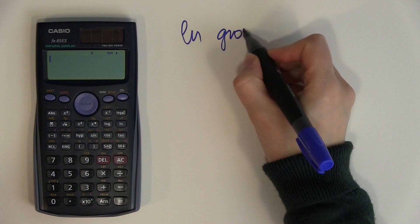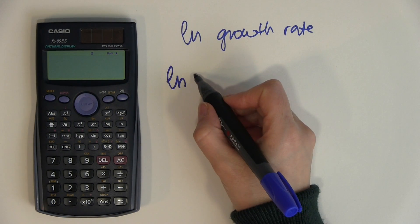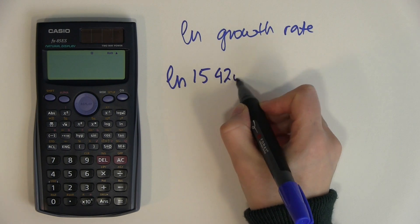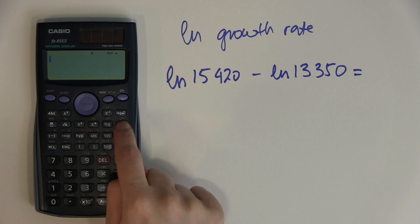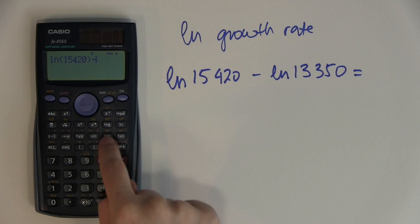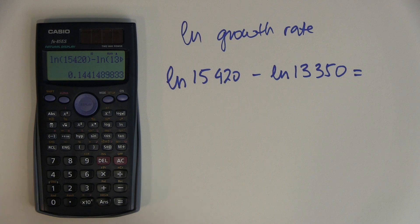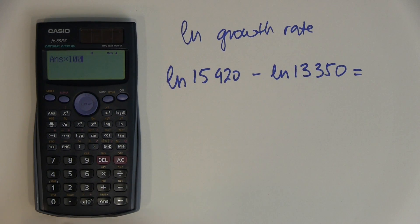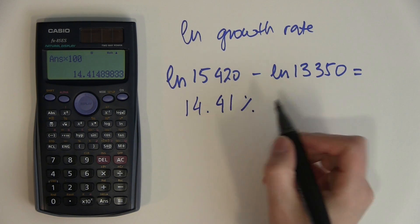Now let's calculate the LN growth rate for the same example — that is, LN 15,420 minus LN 13,350. I press LN, type 15,420, close the bracket to tell the calculator to stop the log there, then subtract LN 13,350 and close that bracket too. I still need to multiply by 100 to get the percentage answer, which gives 14.41%. As you can see, there is a slight difference between the LN growth rate and the percentage growth rate.